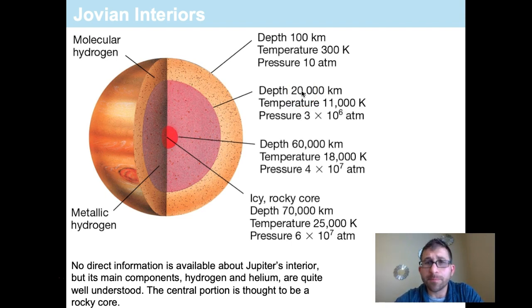As we go down deeper, we go down to a depth of about 20,000 or so kilometers depth. Notice the dramatic temperature rise here, 11,000 Kelvin now. We're significantly higher than the surface temperature of the Sun. Now, that's surface temperature of the Sun. Keep in mind the Sun's core is where nuclear fusion occurs.